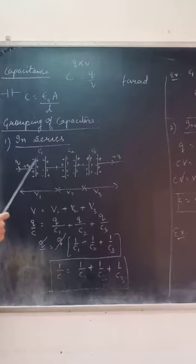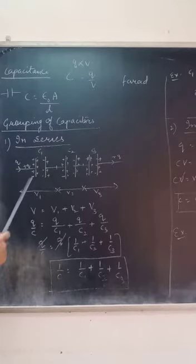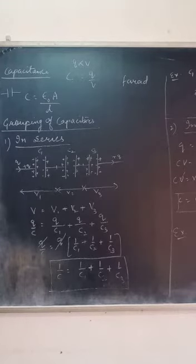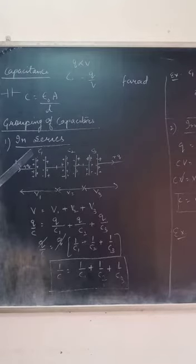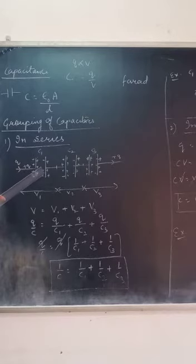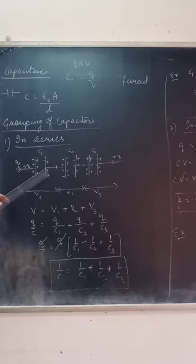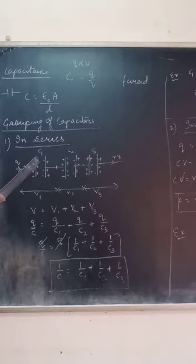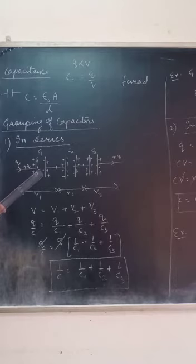The left plate of C1 is positively charged. The other plate — in the initial stage it is uncharged — but due to induction, the opposite charge is induced. So if one side is positive, the other side becomes negative, and the next side becomes positive.